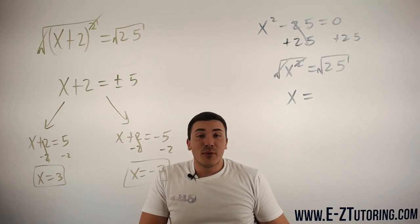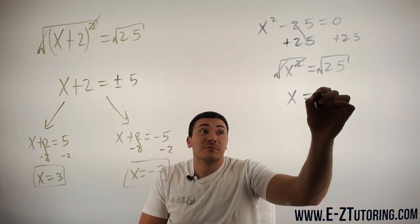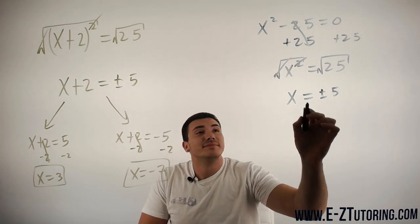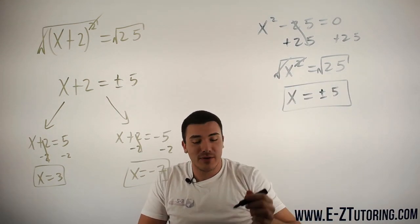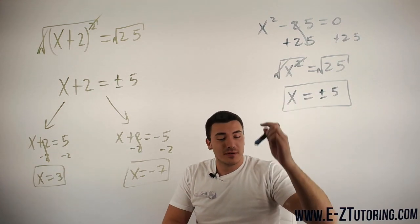And the square root of 25, once again, is plus or minus 5. So this will be your answer for this equation.